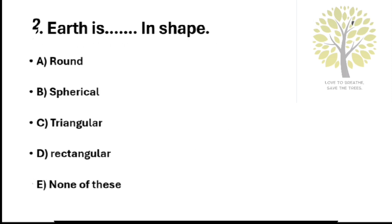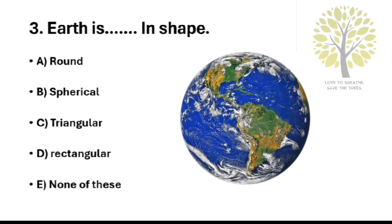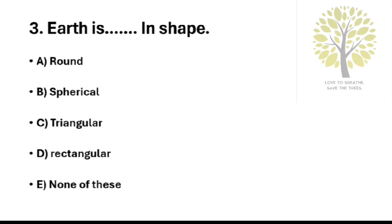Question number 3: Earth is in dash in shape. Option A: Round. Option B: Spherical. Option C: Triangular. Option D: Rectangular. Option E: None of these. The answer is Option A, Round.